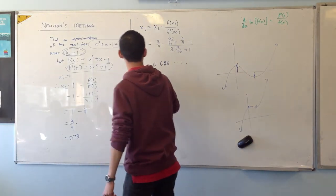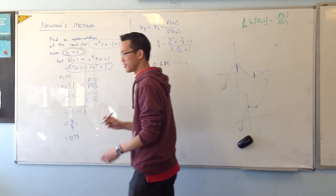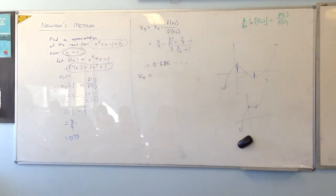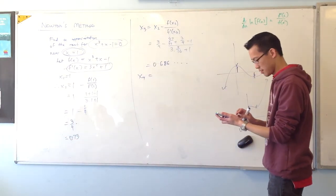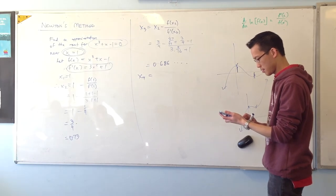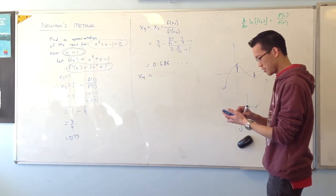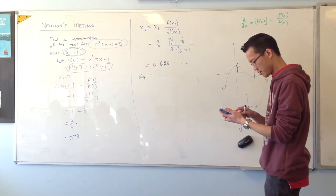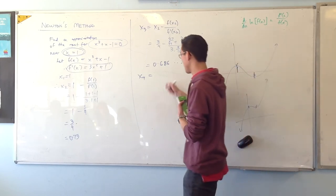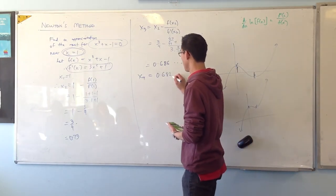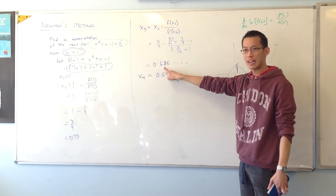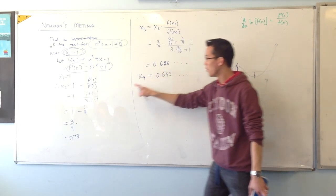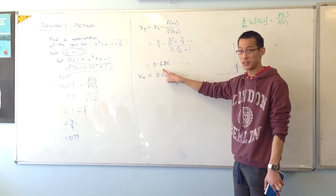How close have we gotten? What's x₄? I assume you need more decimal places. Does anyone get it? 0.682? See, you're already, yeah, okay. So, at this point, we're already two decimal places. One application, two applications. That's pretty good, right?